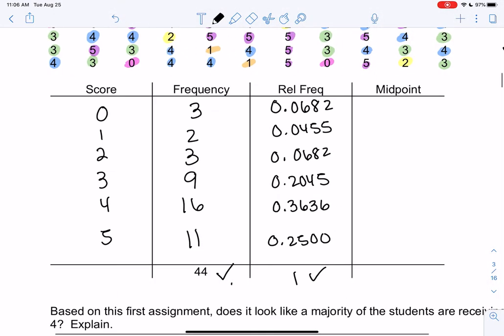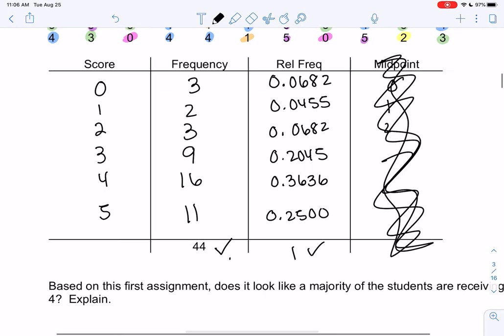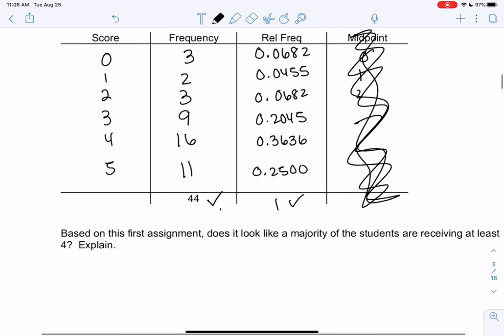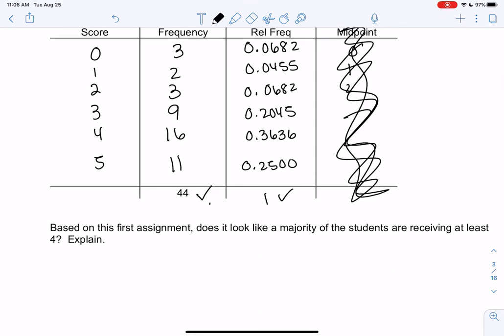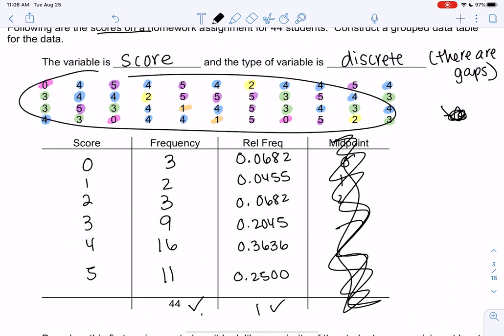And then does midpoint make sense? 0, 1. Is there really any reason to have another column that's the same? No, so we don't need midpoint. We already have a midpoint, right? Because it's already a single value.